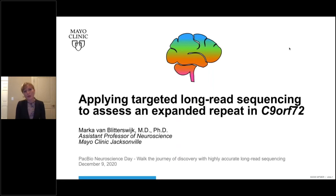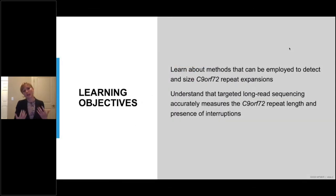Today I will talk to you about how targeted long read sequencing can be employed to examine an expanded repeat in a gene called C9ORF72. By the end of this presentation, you should be familiar with methods that can be employed to detect and size C9ORF72 repeat expansions. Additionally, you will understand that targeted long read sequencing allows accurate measurements of the C9ORF72 repeat length as well as the presence of interruptions.